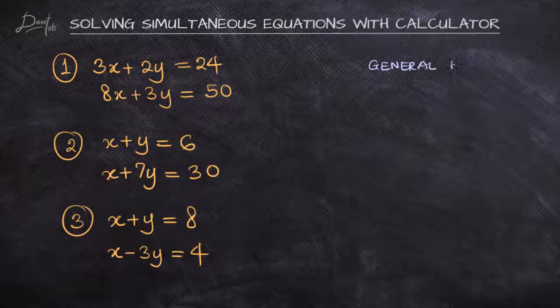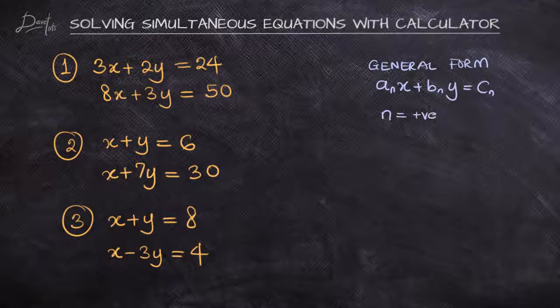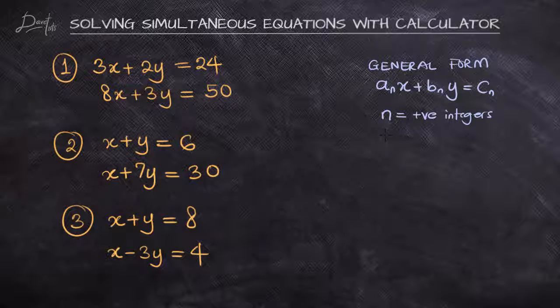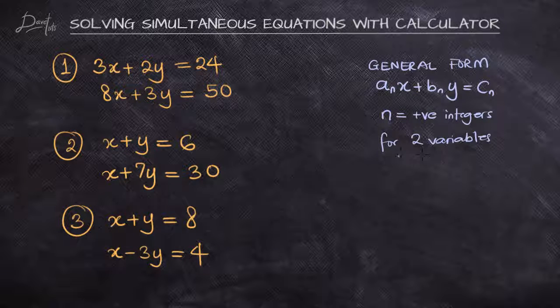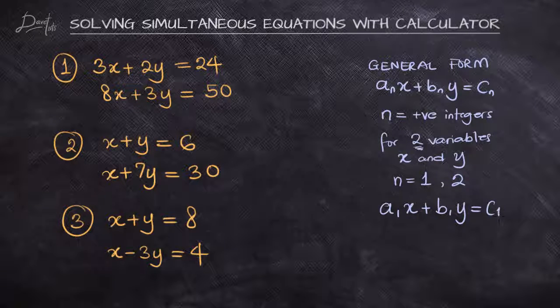The general format is telling us that the coefficient of x times x, plus the coefficient of y times y, gives us a constant c, which we can represent as a_n x plus b_n y equals c_n. For simultaneous equations in two variables, our n is only going to be 1 and 2. So the general format will be a₁x + b₁y = c₁ and a₂x + b₂y = c₂.